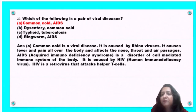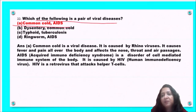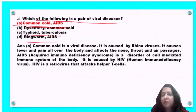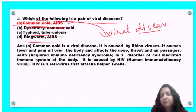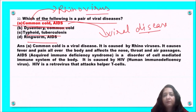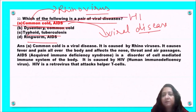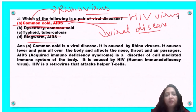Next question: which of the following is a pair of viral diseases — common cold and AIDS; dysentery and common cold; typhoid and tuberculosis; or ringworm and AIDS? Common cold and AIDS are both viral diseases. Common cold is mainly caused by rhinovirus, and AIDS is caused by HIV. So option A, common cold and AIDS, is the correct answer.